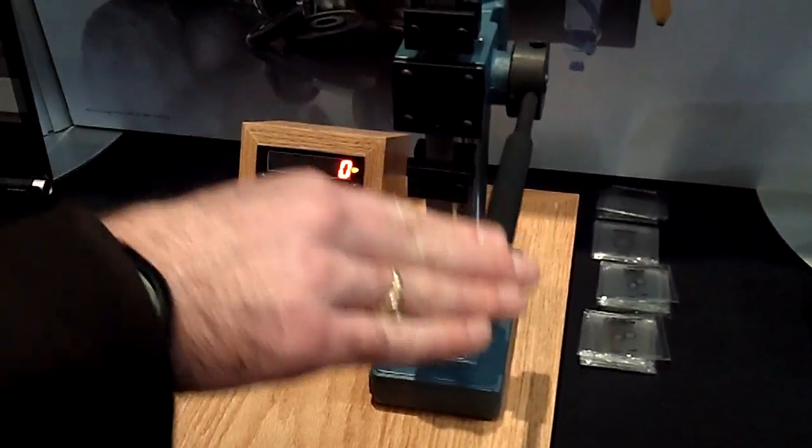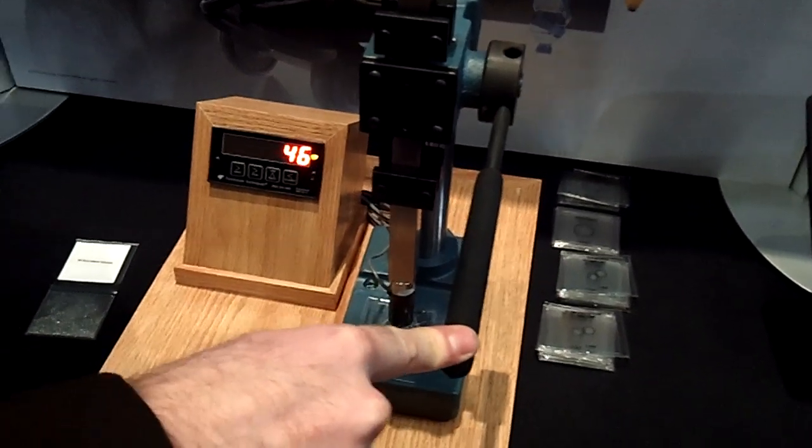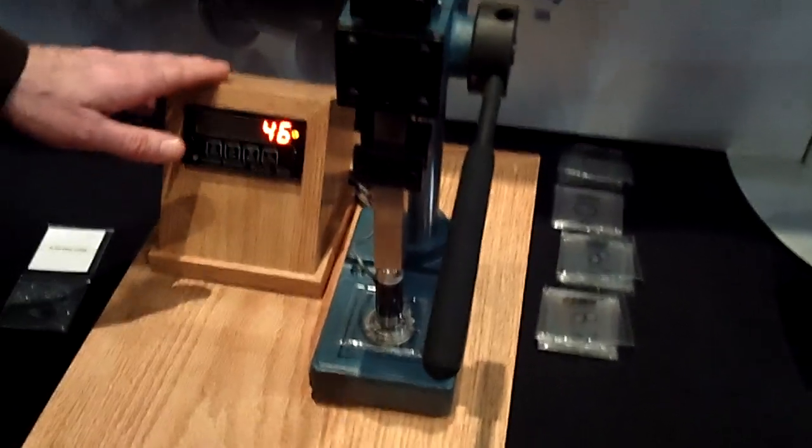We're going to go ahead and break some of these soda-lime samples to show you the difference in the load. This is non-strengthened soda-lime glass. It breaks around 46 pounds.